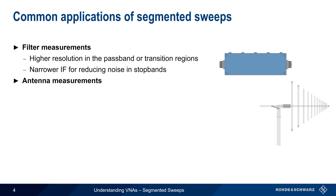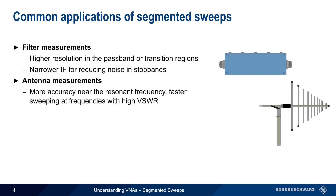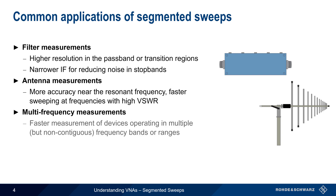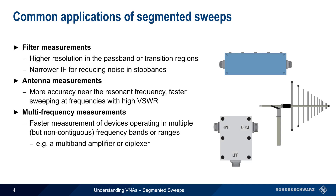Another application of segmented sweep is antenna measurements. Segmented sweep can provide better accuracy near the antenna's resonant frequency, and faster sweeping over ranges where the antenna is not resonant. A third application is when making multi-frequency or multi-band measurements. Segmented sweep is helpful because it can be used to skip frequencies between the frequency ranges of interest, for example with a multi-band amplifier or measurements made on a diplexer, which combines signals at different frequencies.